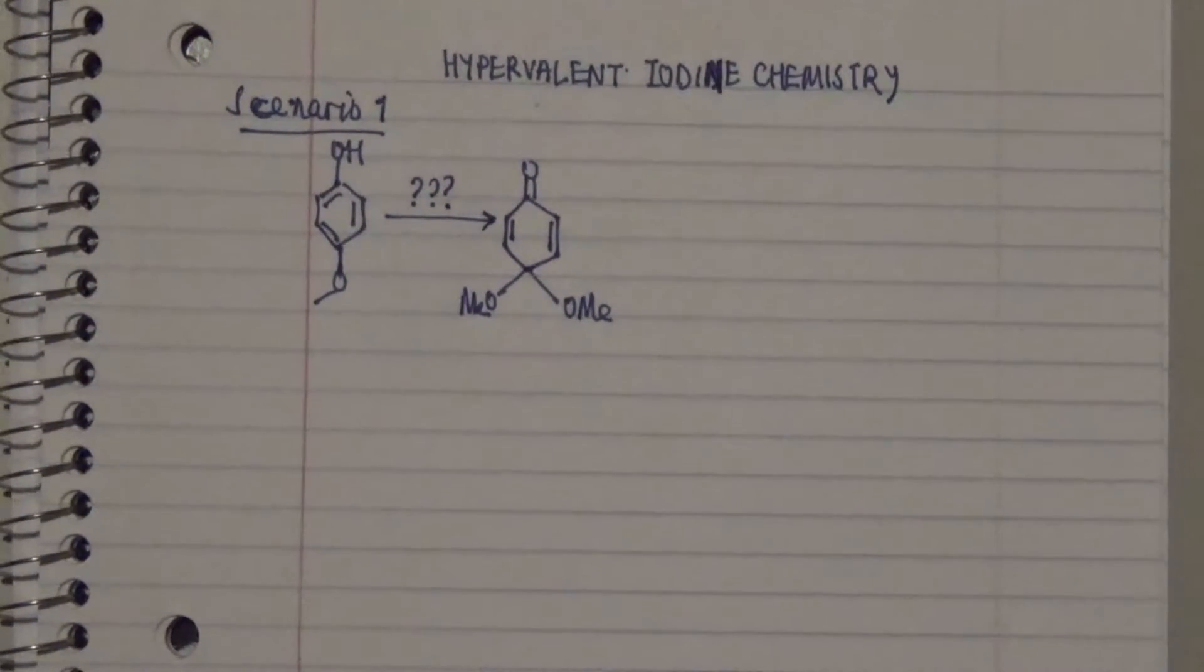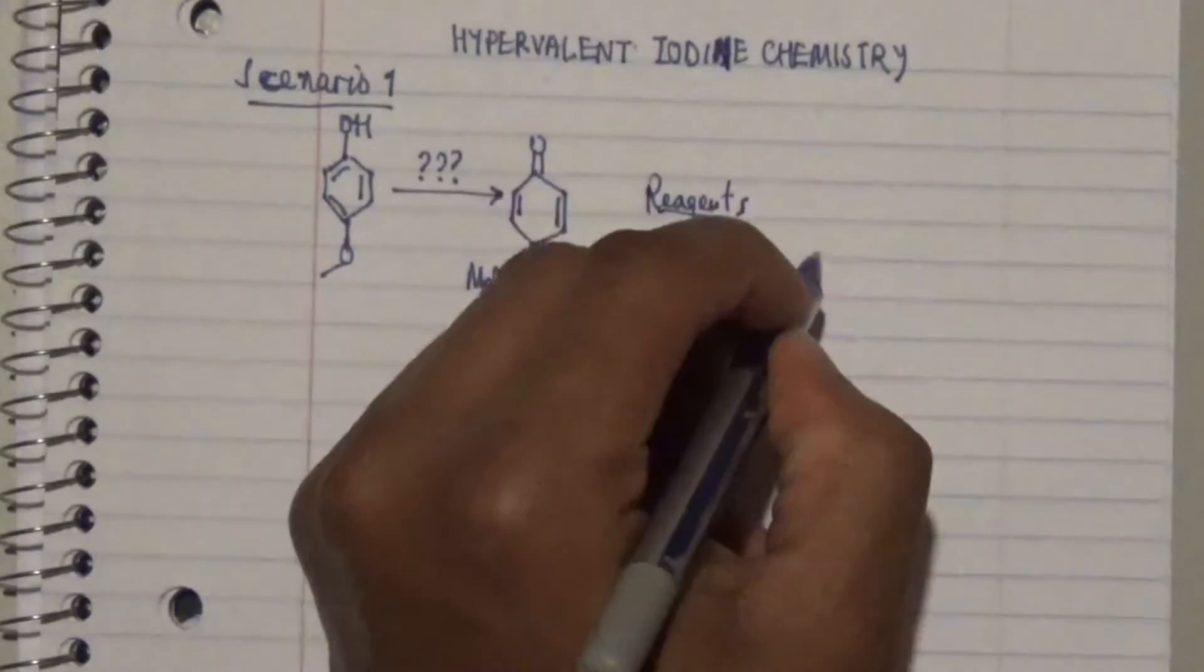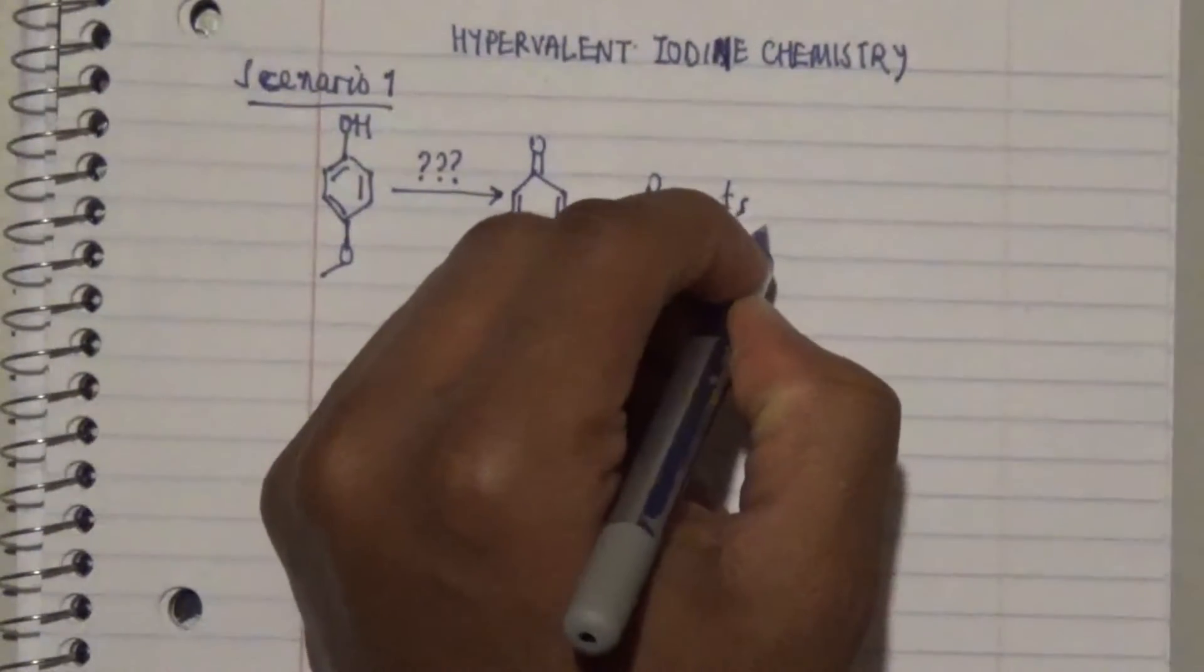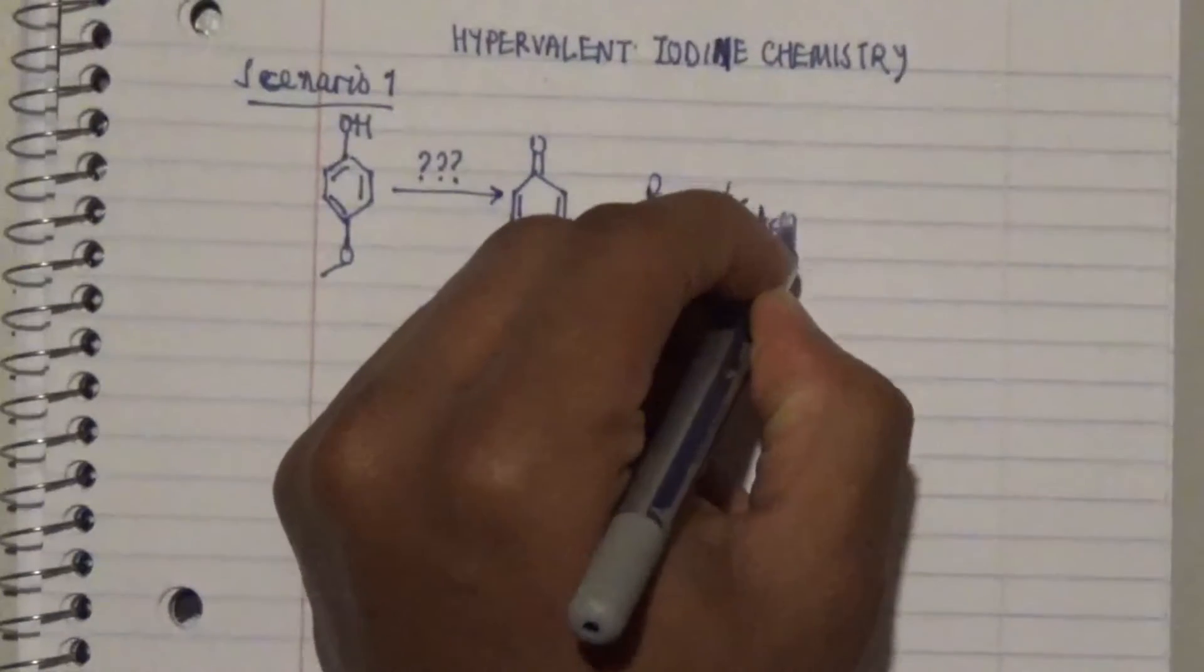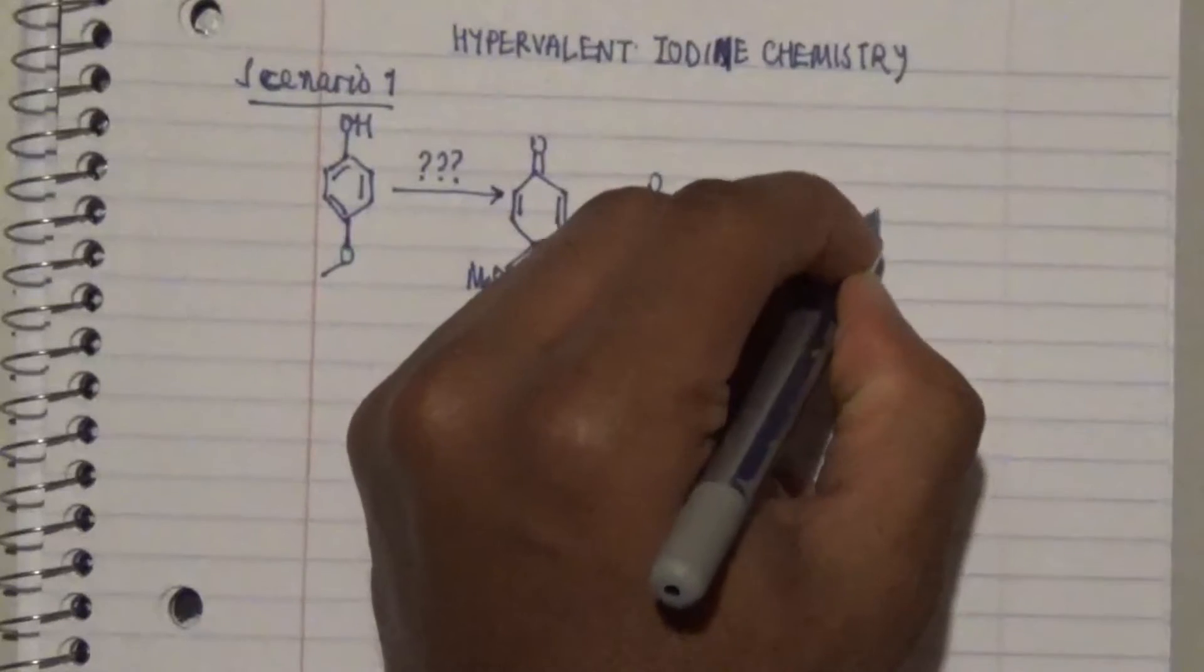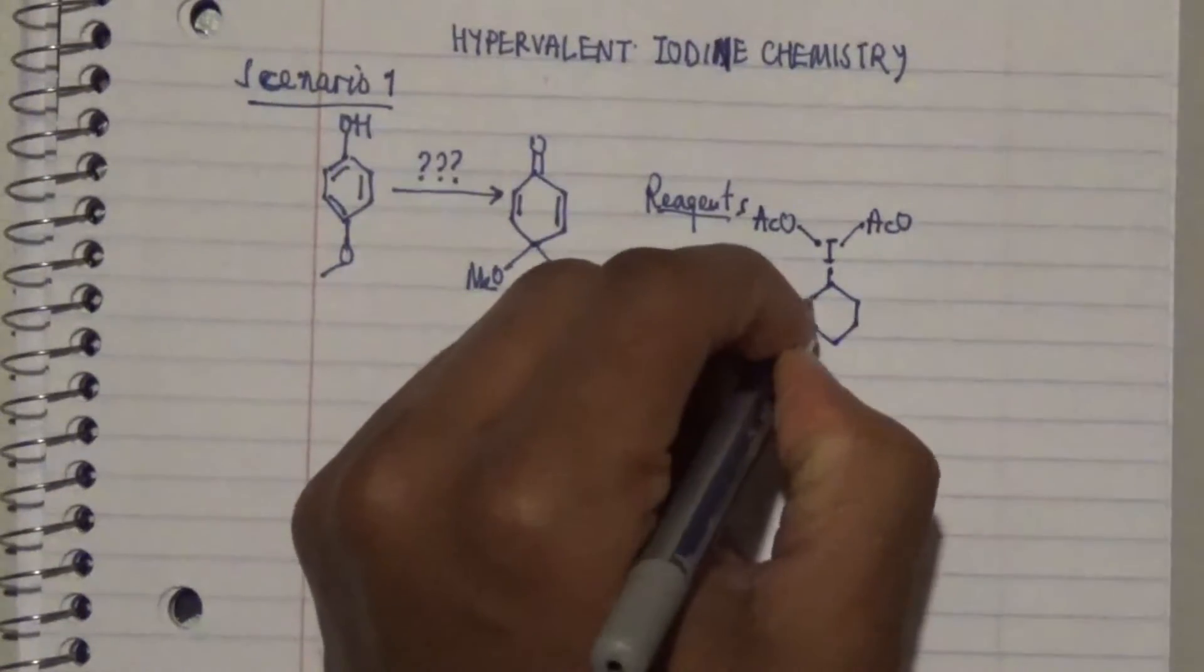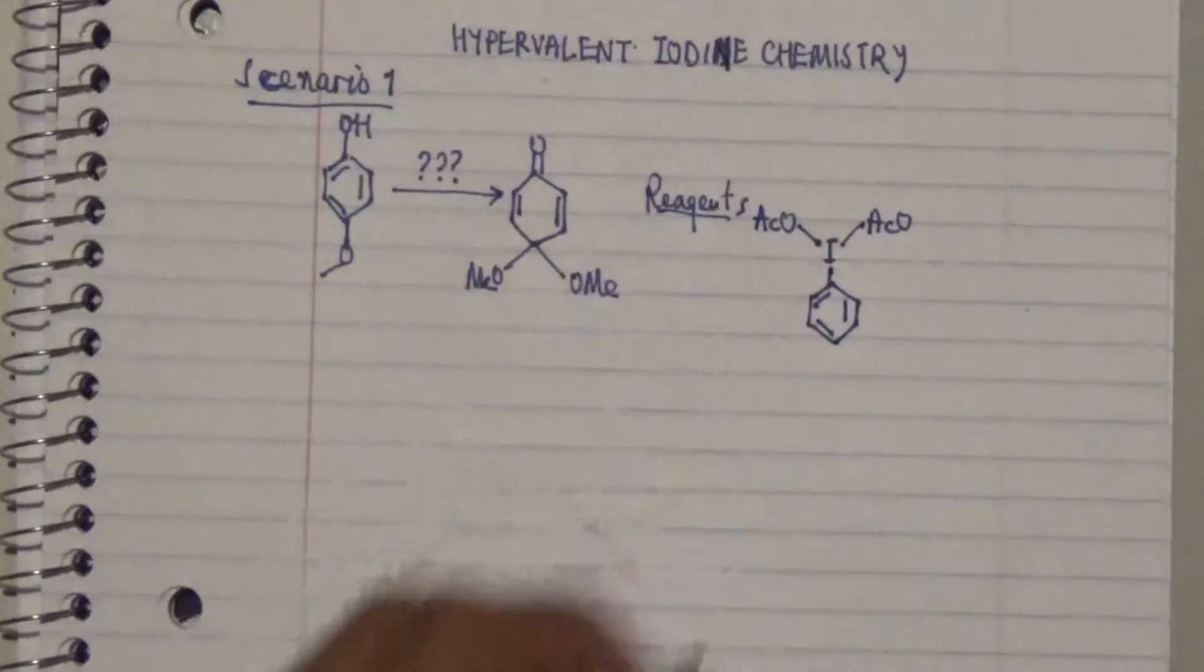What are the reagents that we can use to actually convert this? One reagent or reagent combination you can use includes an acetyl attached to iodide, and the iodide is attached to a benzene group.